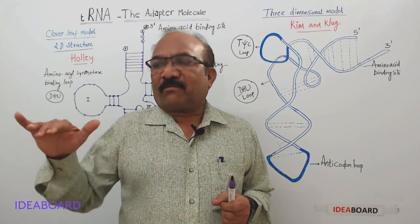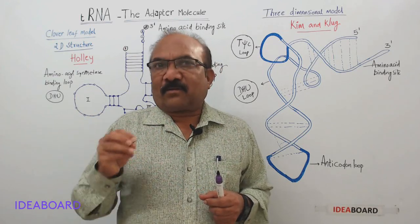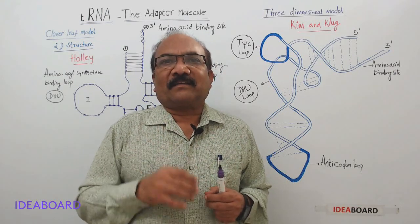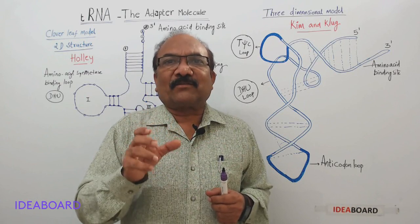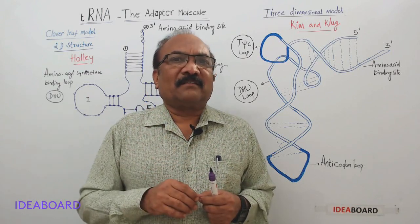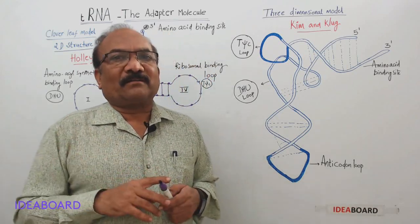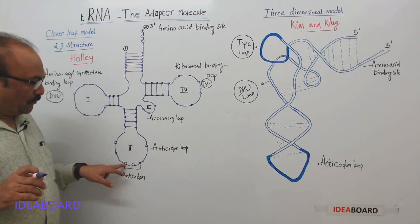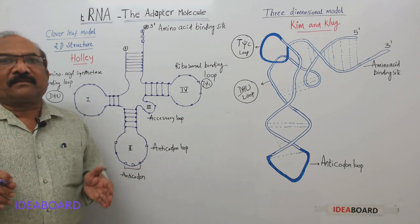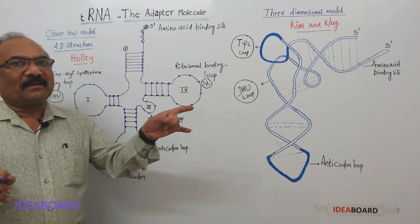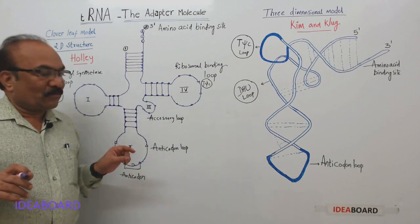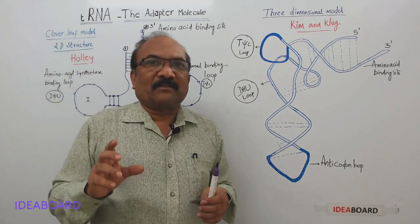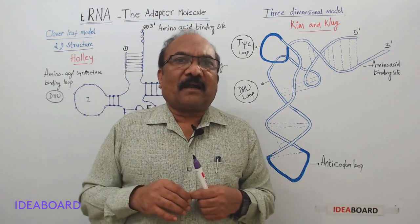The codons on mRNA have to be decoded, and who decodes them? Transfer RNA, with the help of three successive nucleotides present at one particular region called the anticodon. The anticodon on tRNA is complementary to the codon on mRNA. With the help of this anticodon, tRNA recognizes the codon — that is why it is called translator RNA.